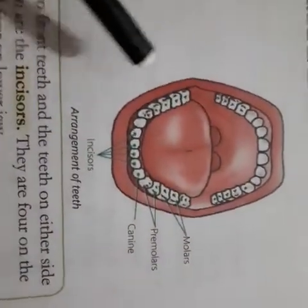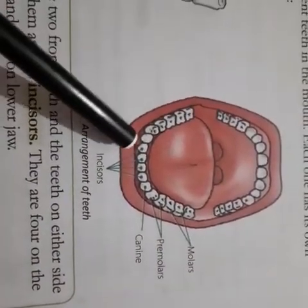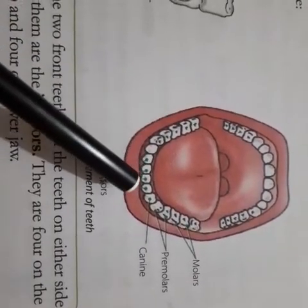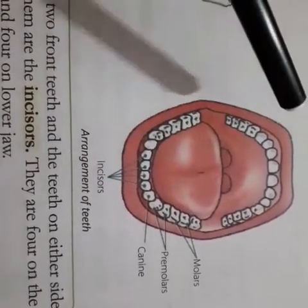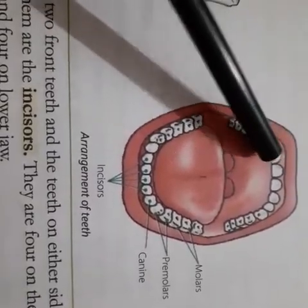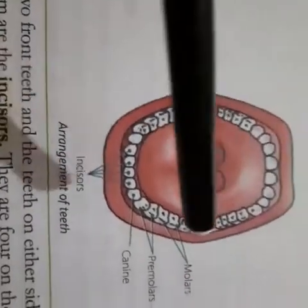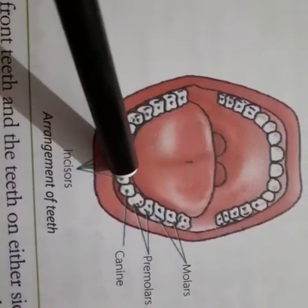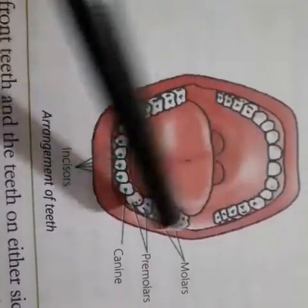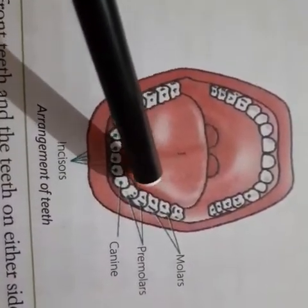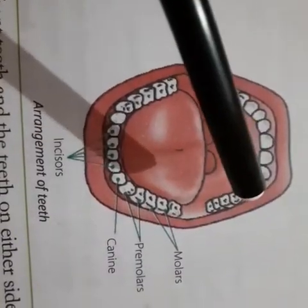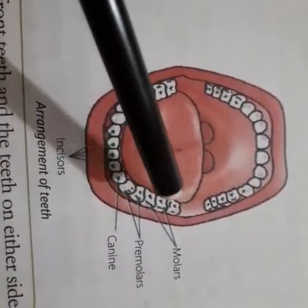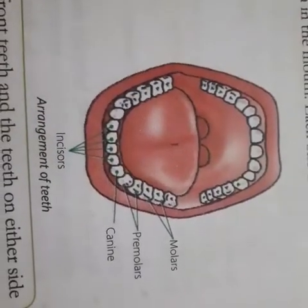Here is the arrangement of the teeth. Starting with 4 incisors on the upper side and the lower side. Then 1 and 2 canines on both sides, followed by premolars on both sides, and molars on both sides. These are the teeth found in your mouth.